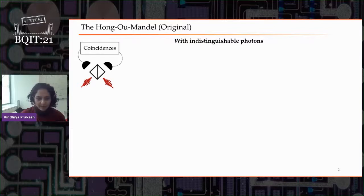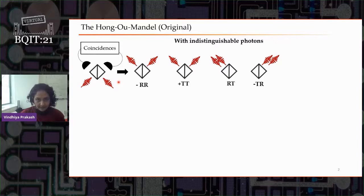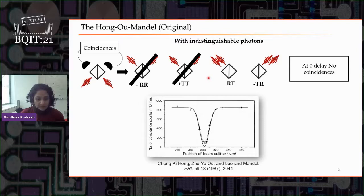Let me get into answering that first by recapping the Hong-Ou-Mandel experiment, though everybody here probably already knows it. In the Hong-Ou-Mandel original experiment, two photons that are indistinguishable were brought into two input ports of a beam splitter. We checked for coincidences at the two output ports. These photons can take four possible paths: both reflected, both transmitted, first reflected and second transmitted, or first transmitted and second reflected. And if these photons are arriving at the same time, the first two possibilities are indistinguishable from each other and their probability amplitudes destructively interfere. That was shown by Hong and Mandel way back in 1987.